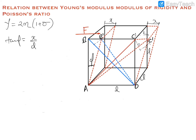For a small displacement, tan phi is approximately equal to phi. Now we concentrate on the face diagonals of this cube.